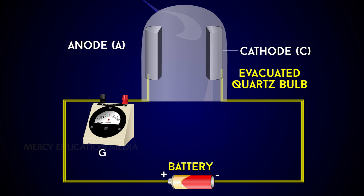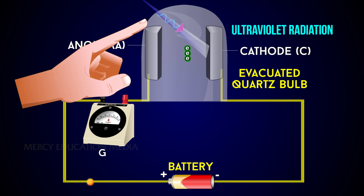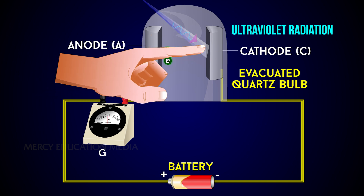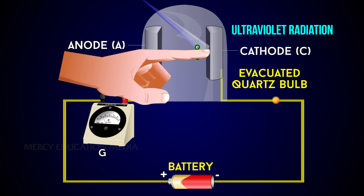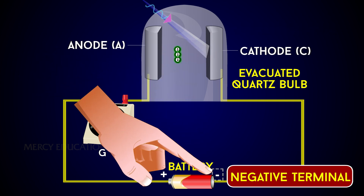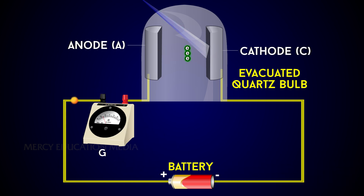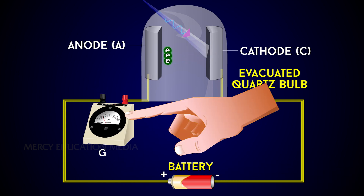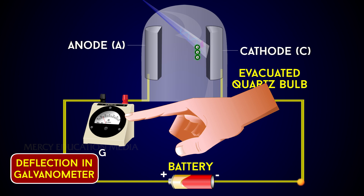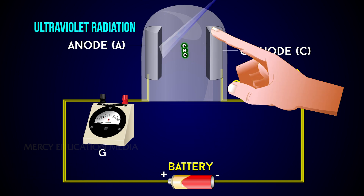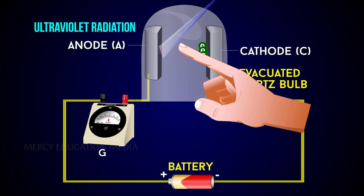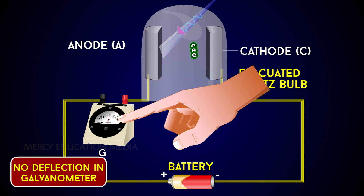But when an electromagnetic radiation like ultraviolet radiation is allowed to fall on the plate C, which is connected to the negative terminal of the battery, a current begins to flow, indicated by the deflection in the galvanometer G. But when ultraviolet radiation is made to fall on A, there is no deflection in the galvanometer.